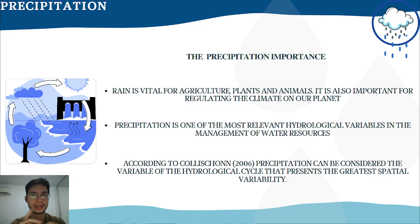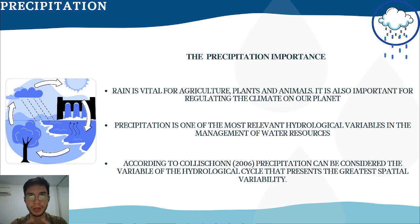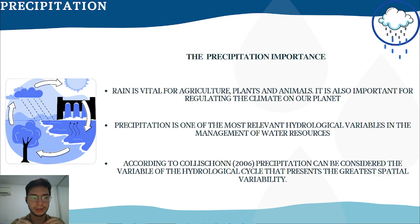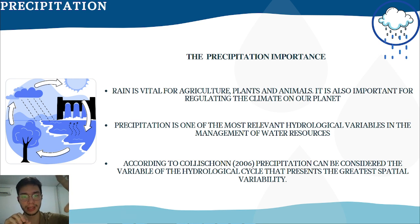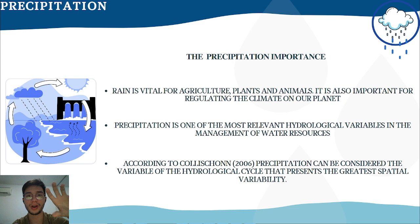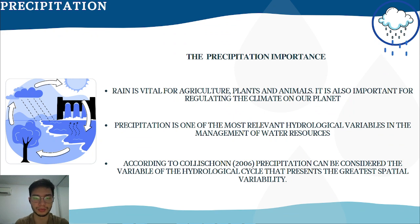Precipitation can be considered the hydrological cycle variable that presents the greatest spatial variability — not just in space, but also in time. This means that rain varies both in time and space, which makes the procedure of analyzing this parameter much more complex. For example, the rain happening in Santander in northern Spain is not the same as in Granada in southern Spain. But over time, the rain can stop in Santander and start in Granada. Understanding precipitation and its patterns is vital to better management of water resources.